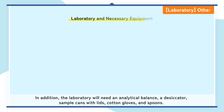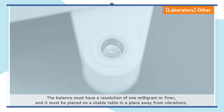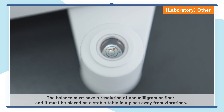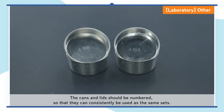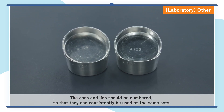In addition, the laboratory will need an analytical balance, a desiccator, sample cans with lids, cotton gloves, and spoons. The balance must have a resolution of one milligram or finer, and it must be placed on a stable table in a place away from vibrations. The cans and lids should be numbered so that they can consistently be used as the same sets.